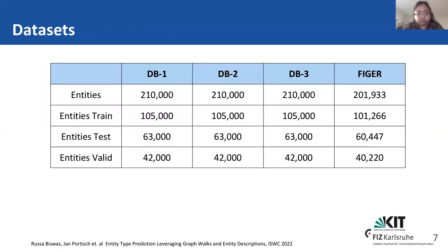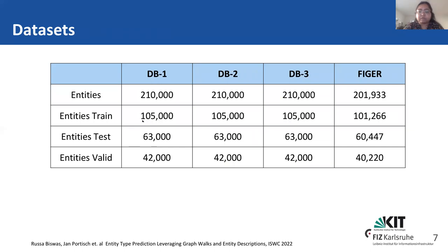The datasets used to evaluate our model are DBpedia and FIGER. DBpedia 1, 2, 3 are three equal splits of the DBpedia 630k dataset. FIGER comes from Freebase and consists of 201,933 entities with 102 classes. For DBpedia, the initial dataset comprises 14 classes, but we have extended it with the hierarchy and now it comprises 48 classes. The train, test, and validation splits consist of 50%, 30%, and 20% of all the entities.